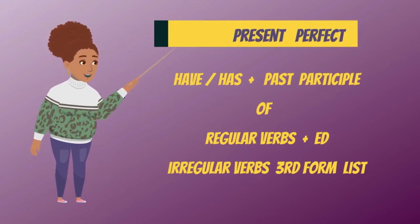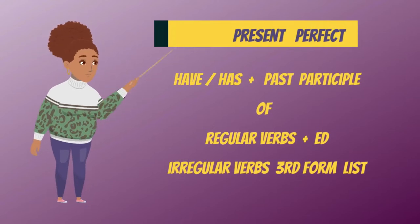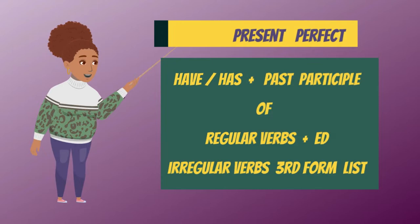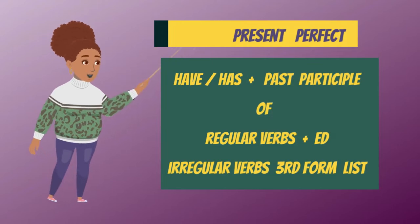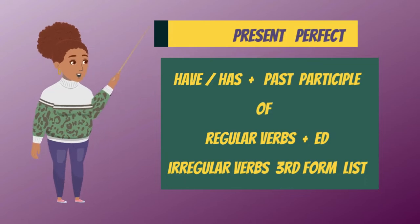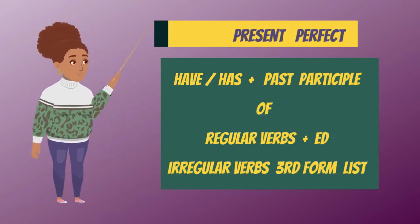Hello, dear students. Today we are talking about the present perfect in English. The present perfect is formed with have or has, plus the past participle of the verb, either regular or irregular verbs.